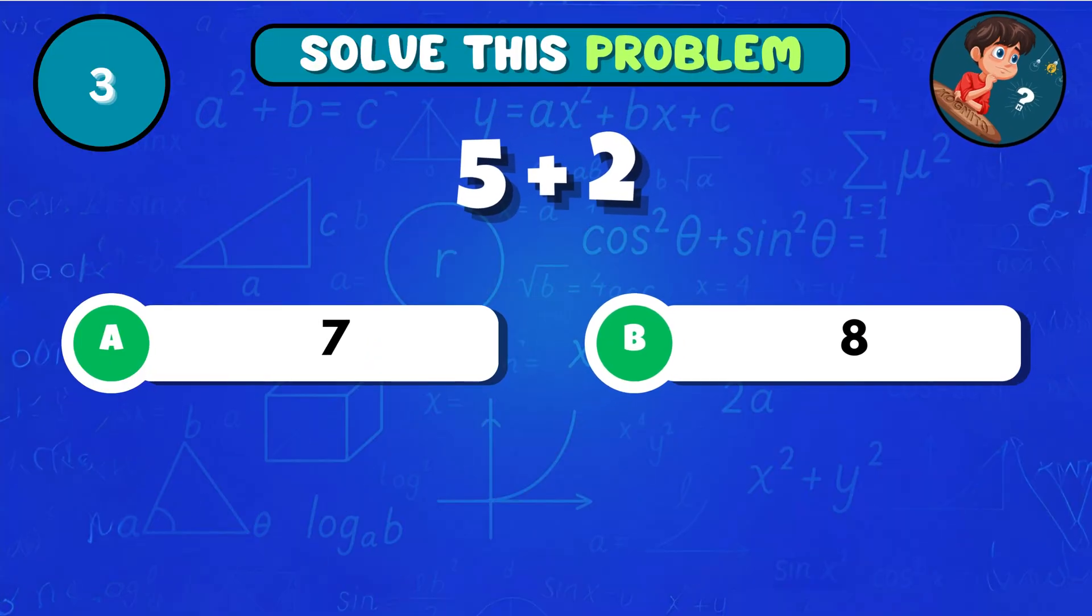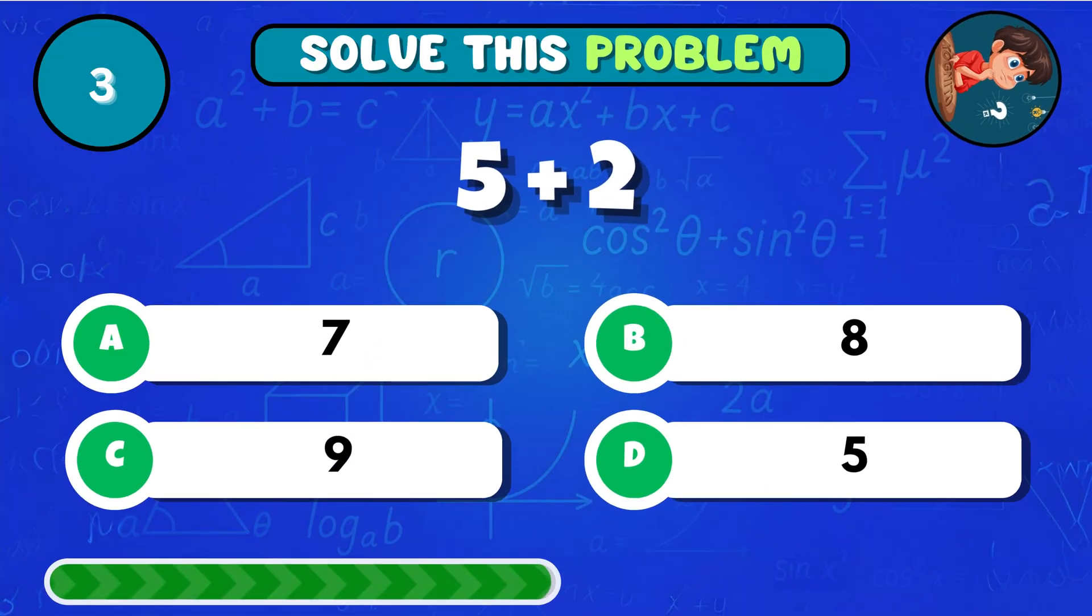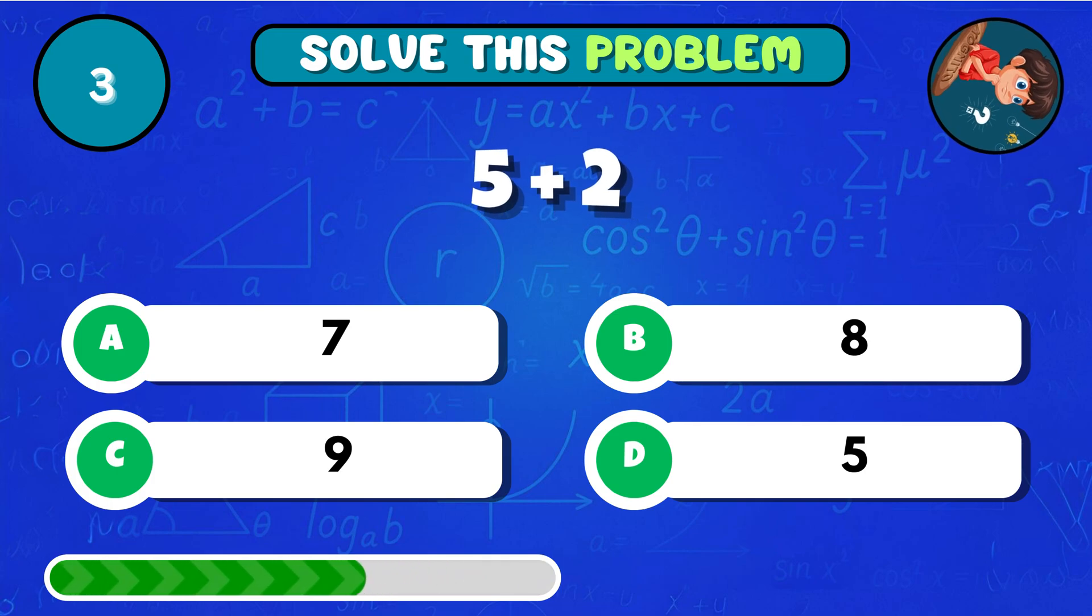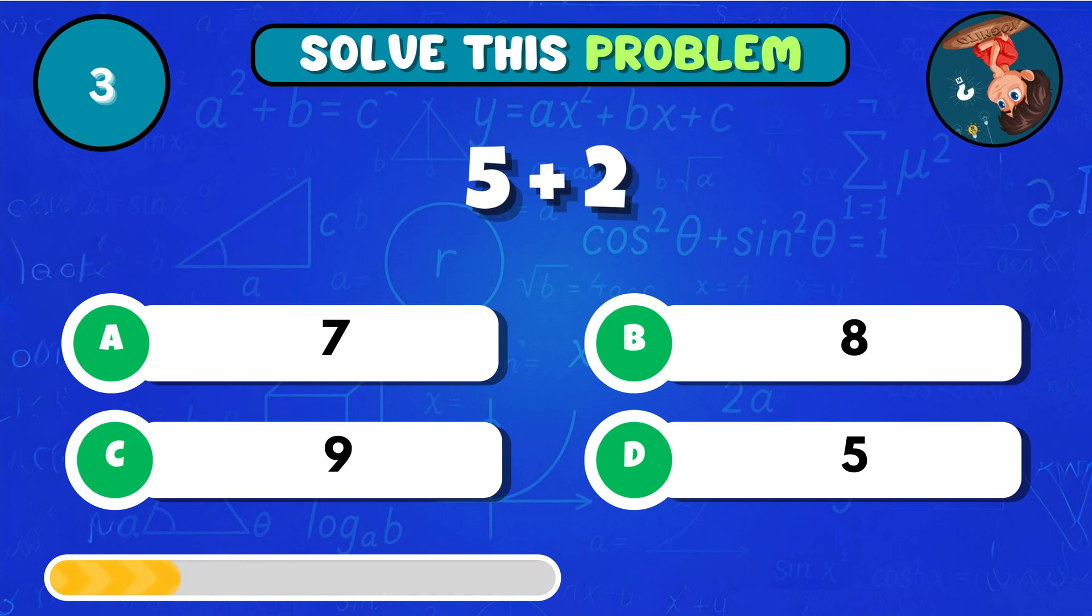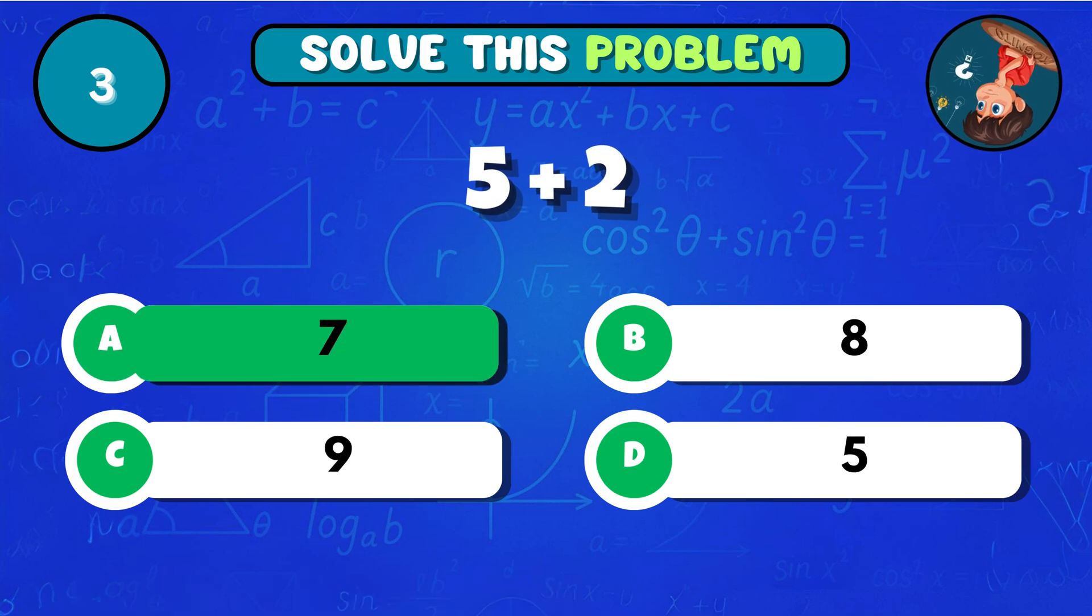What do you get when you add 5 and 2? You get A 7!